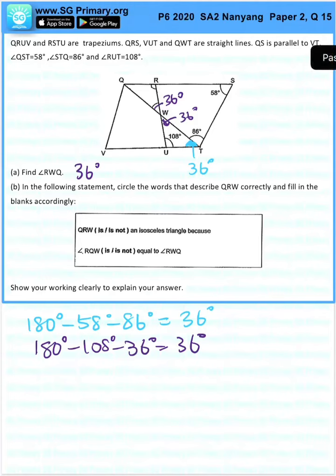Let's look at the second statement. In the following statement, circle the words that describe QRW correctly and fill in the blanks accordingly. QRW is or is not an isosceles triangle because angle QRW is or is not equal to RWQ.